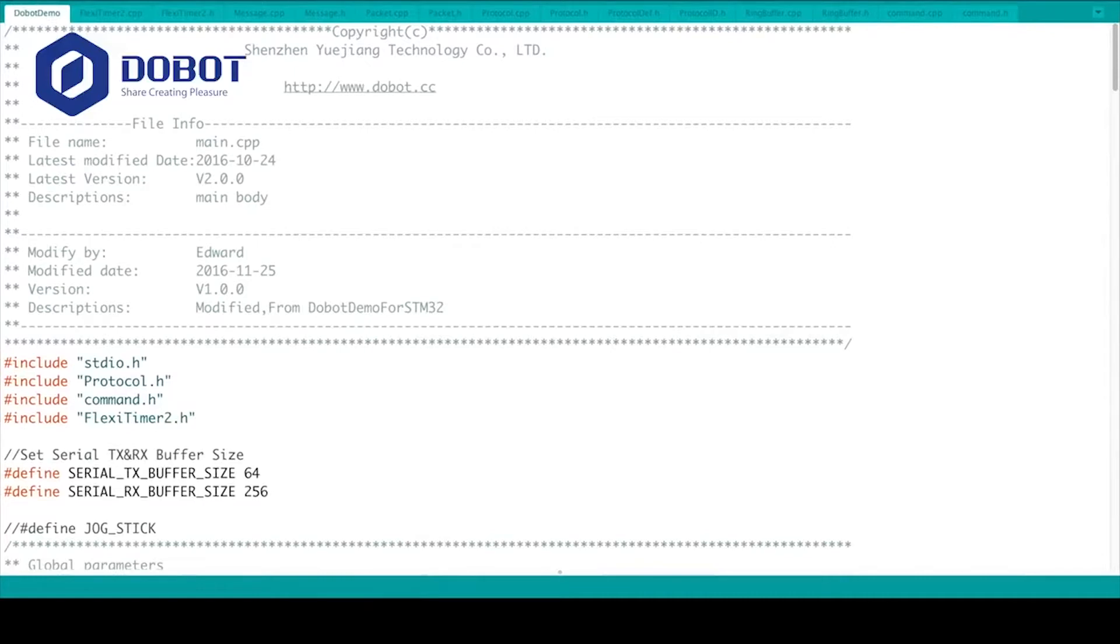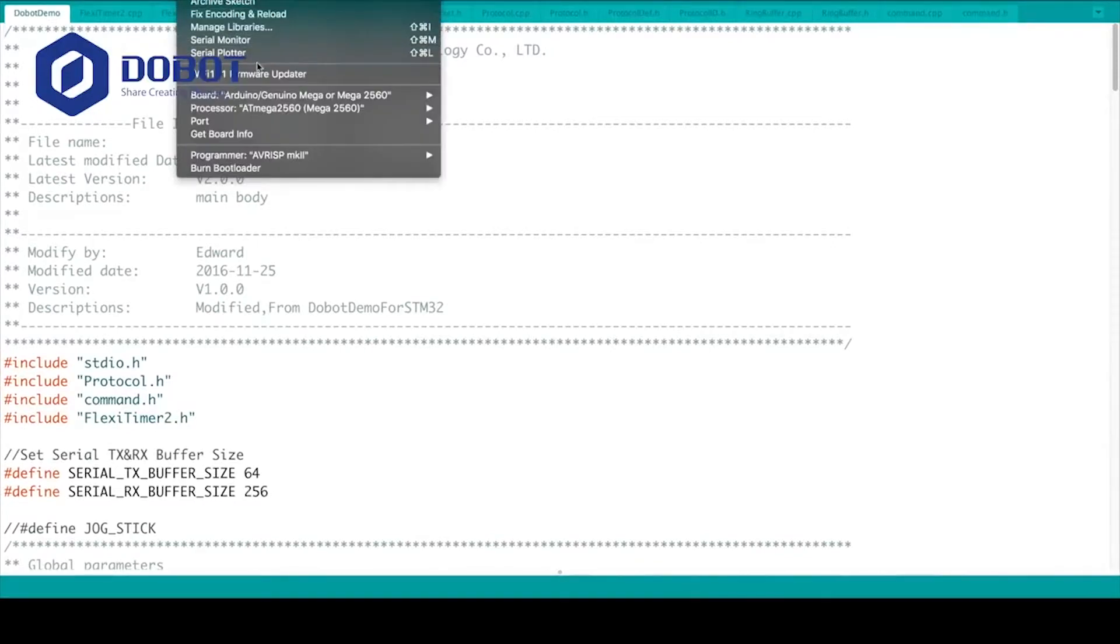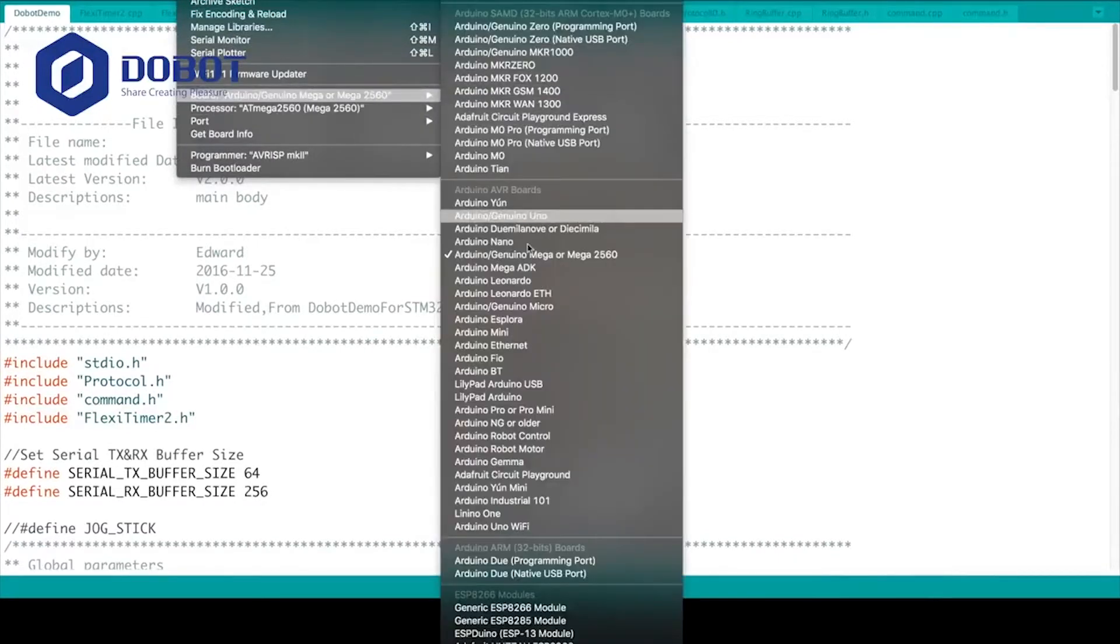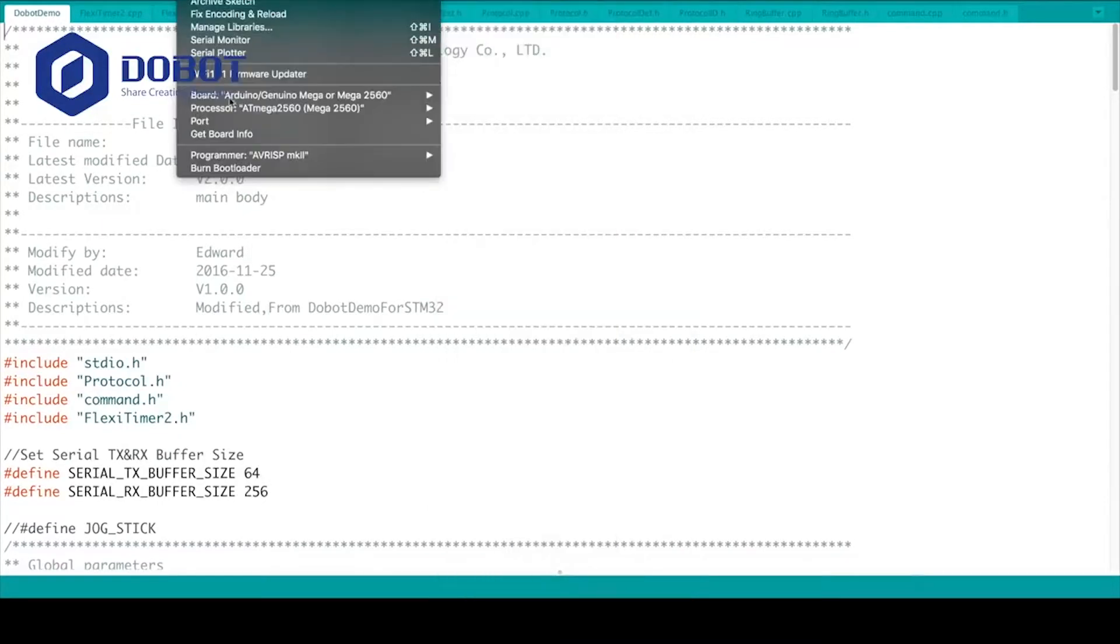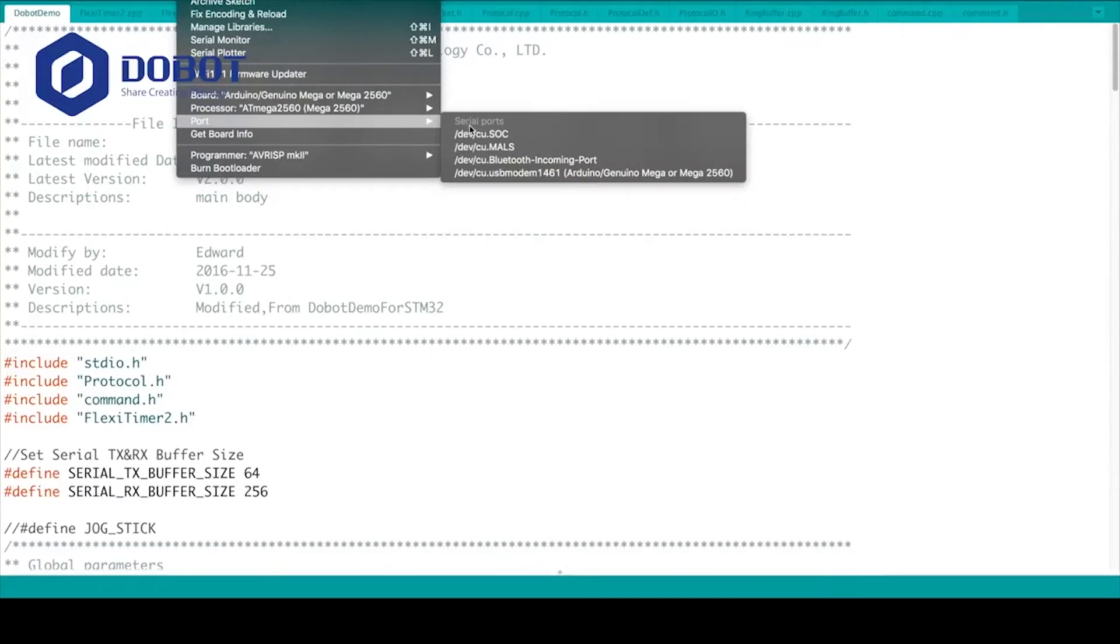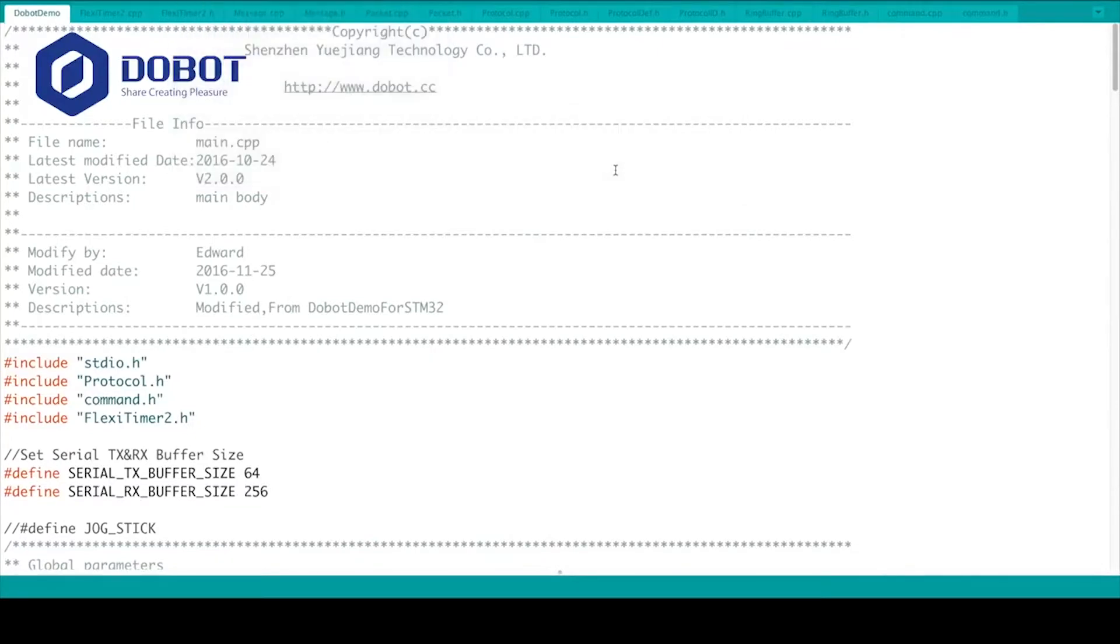And then, go ahead and go to Tools, Board, Arduino, Genuino, or Mega 2560. Select that. Leave everything default. Go to Port. And select the port where your Mega is connected.